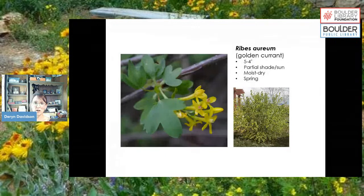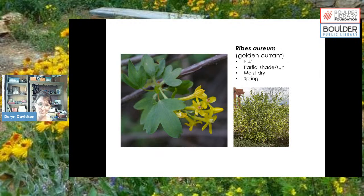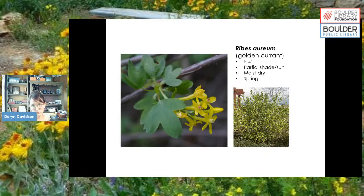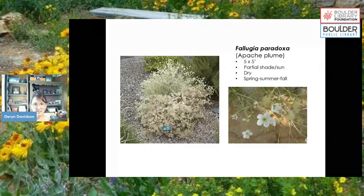Ribes aureum, golden currant, is a woody shrub that gets four to five feet. It can handle a little shade — if you're ever out hiking you'll notice it nestled near ponderosa pines. In springtime it pops with yellow flowers that have a clove scent and it's a great early bloomer. Fallugia paradoxa, or Apache plume, is covered in white flowers and also has seed heads at the same time — they get wispy fluffy seed heads alongside blooming, which is unusual, and they have a really long bloom season.